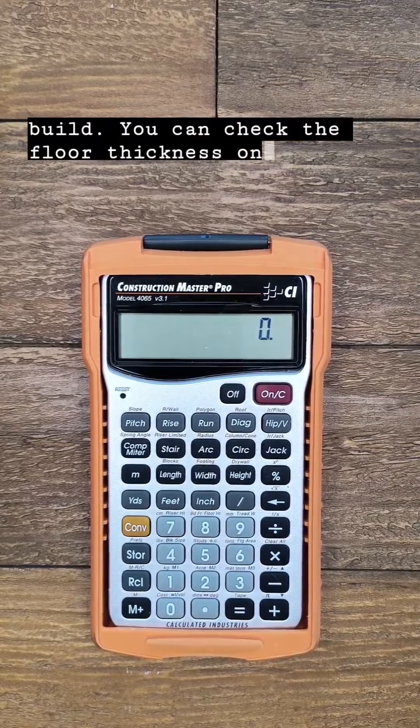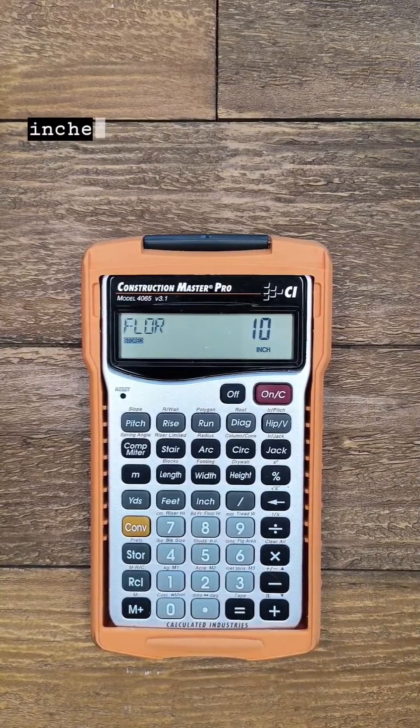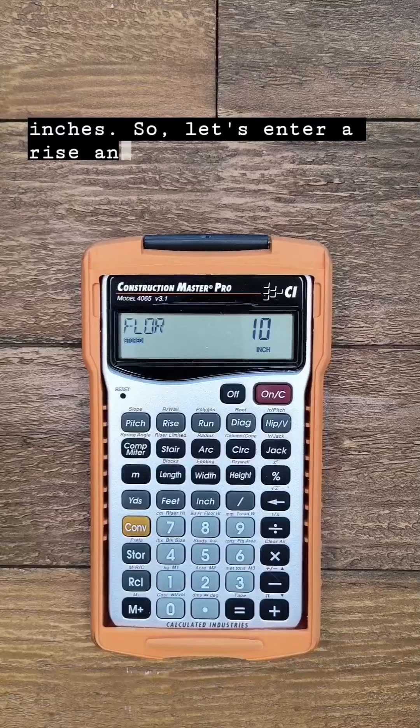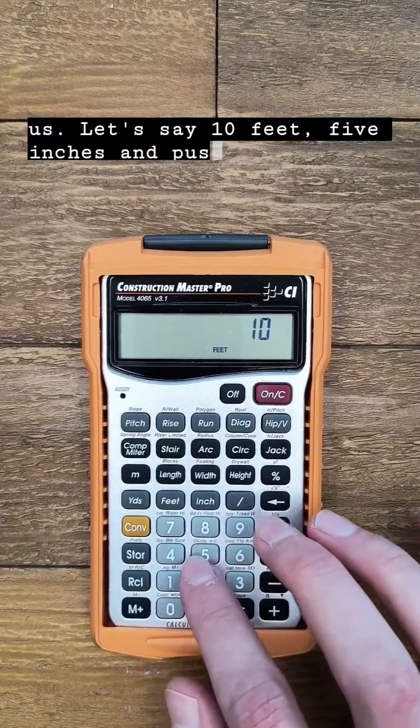You can check the floor thickness on the calculator by pushing recall 8. The default is 10 inches. So let's enter a rise and see what that gives us. Let's say 10 feet 5 inches and push rise.